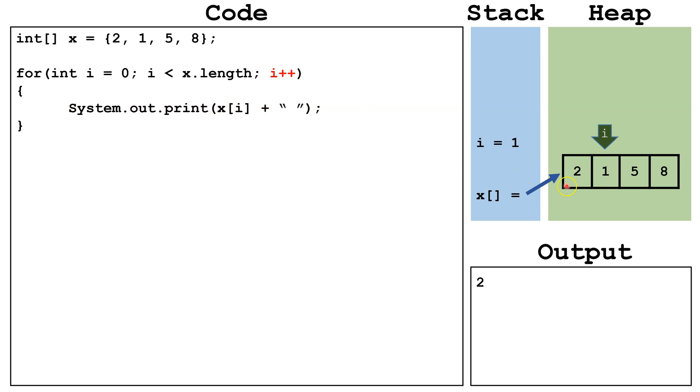So now i equals 1 and we are going to be looking at index 1 on the array. We check is i less than x dot length. 1 is less than 4, so we continue.